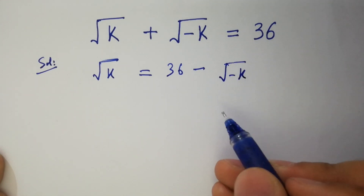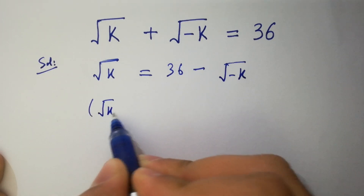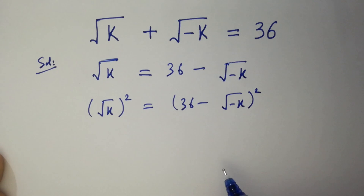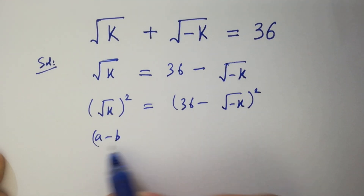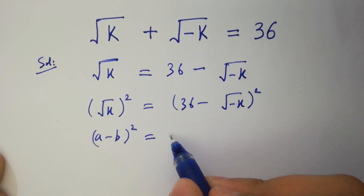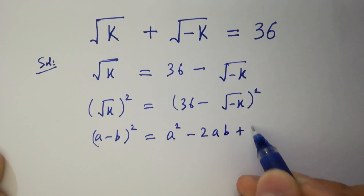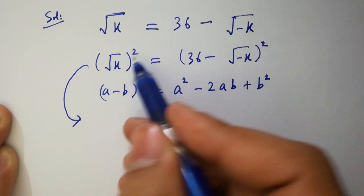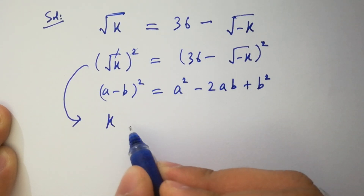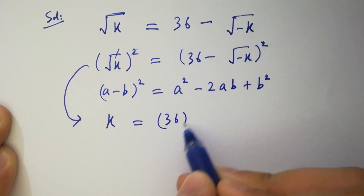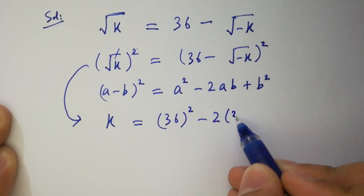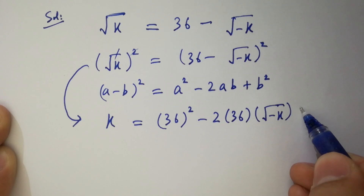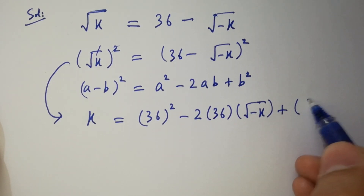Take square on both sides. As we know, (a minus b) whole square equals a squared minus 2ab plus b squared. So it will be: from square root we have k equal to 36 squared minus 2 times 36 times square root of minus k, plus square root of minus k squared.